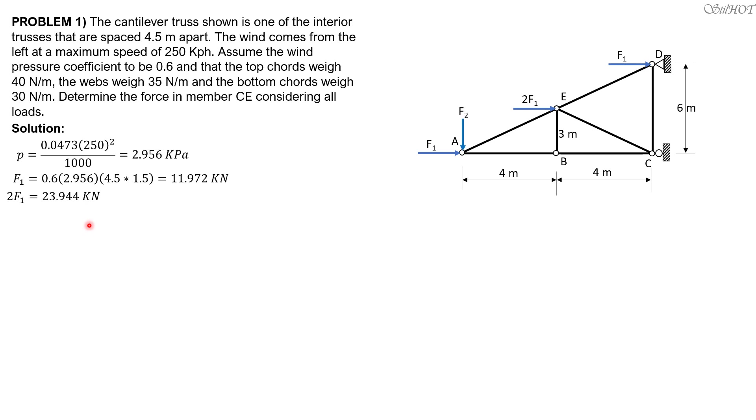Then for F2, so 2F2 at the center joint, F2 at the extreme right joint. Only the top chord will be subjected to wind pressure. So F2 equals 0.6 times 2.956 times quantity 4.5 times 2. The tributary width is 2 meters, half of 4. Then for the center joint, it's 4. For the last joint, it is 2 again. So 2F2 equals 31.925 kilonewtons.